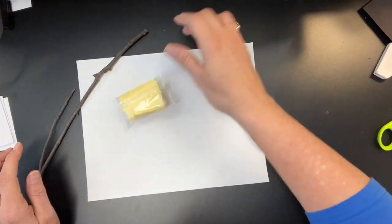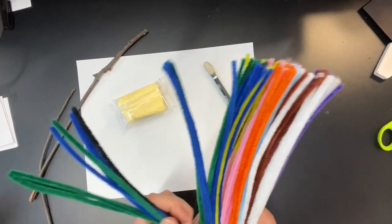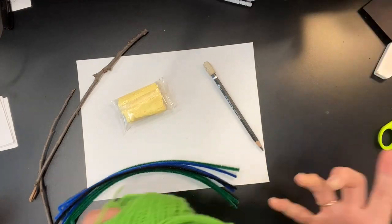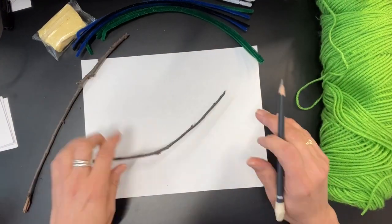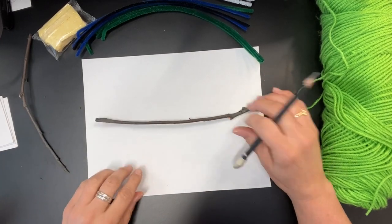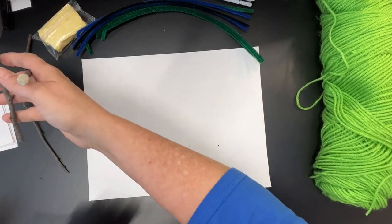Your supplies are a stick, model magic, pipe cleaners, and yarn - it is up to you. Then we'll paint our project. You need to find a stick that makes you happy and it needs to lie flat because we're going to mount these on paper.